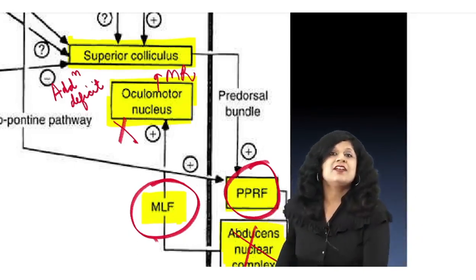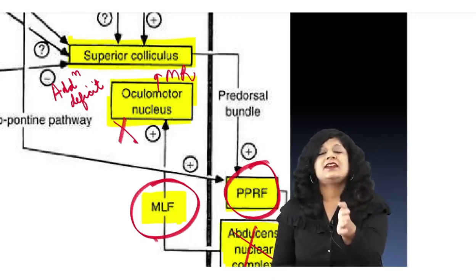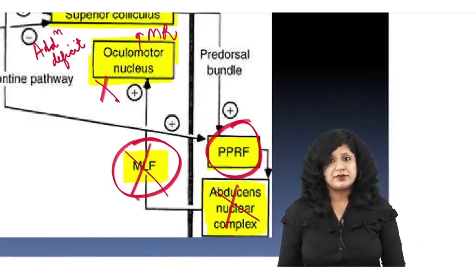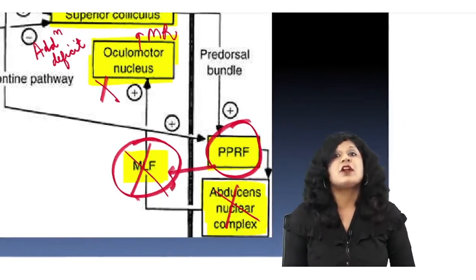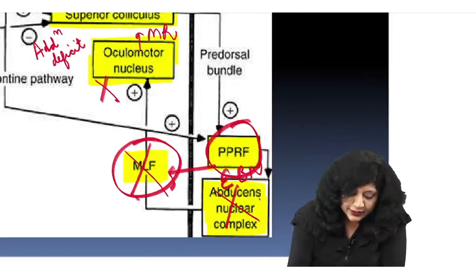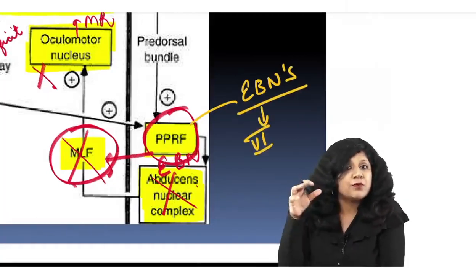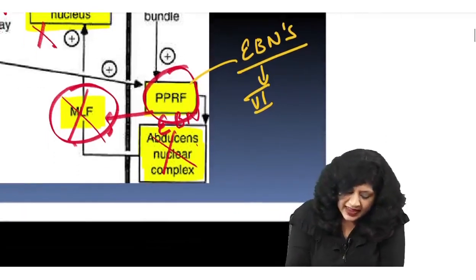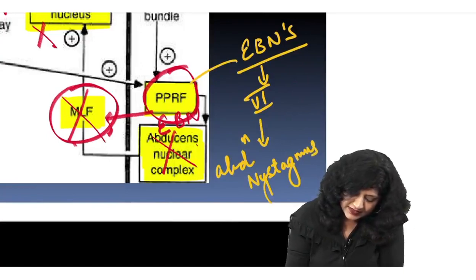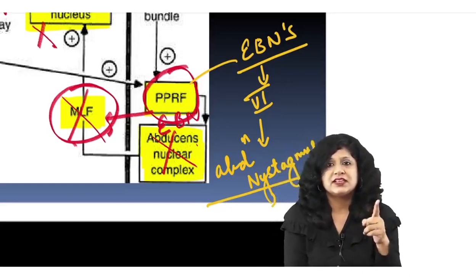Why do we get abduction nystagmus in INO? The excitatory burst neurons are lying in the PPRF. If there is a problem with the MLF, the PPRF sends more excitatory burst neurons to the sixth nerve nucleus, causing more and more energy flowing to the sixth nerve nucleus, exciting it further — this leads to abduction nystagmus. The excitatory burst neurons are responsible for abduction nystagmus.